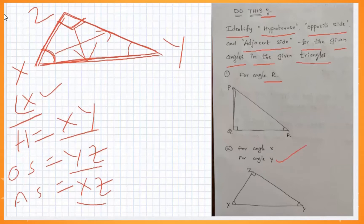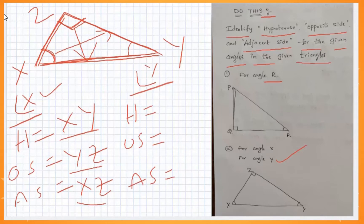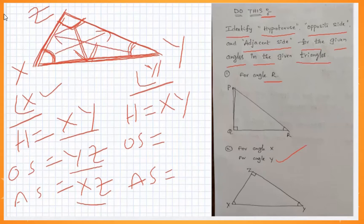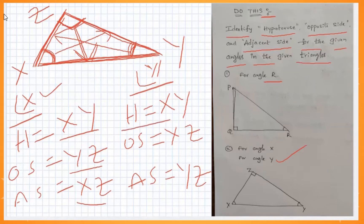Now let's move on. For angle Y, the hypotenuse is still XY — it remains the same. According to angle Y, the opposite side is XZ, and the adjacent side is YZ. So hypotenuse equals XY, opposite side of angle Y equals XZ.